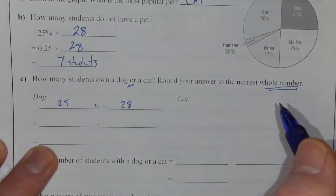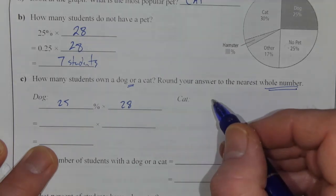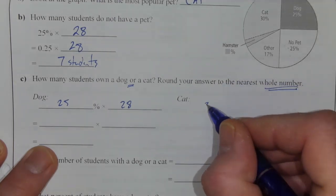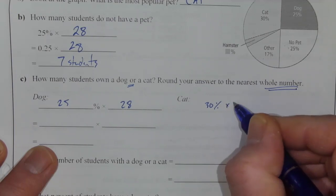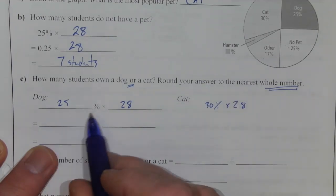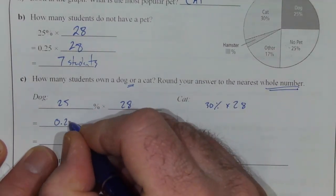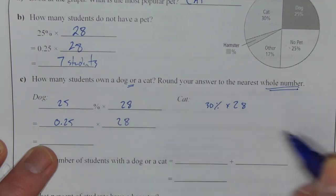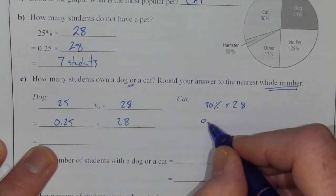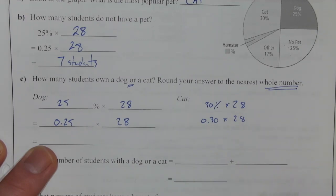Cat was 30%. So 30% times 28. 25% is 0.25, multiply that by 28. 30% is 0.30, again, multiplied by 28.